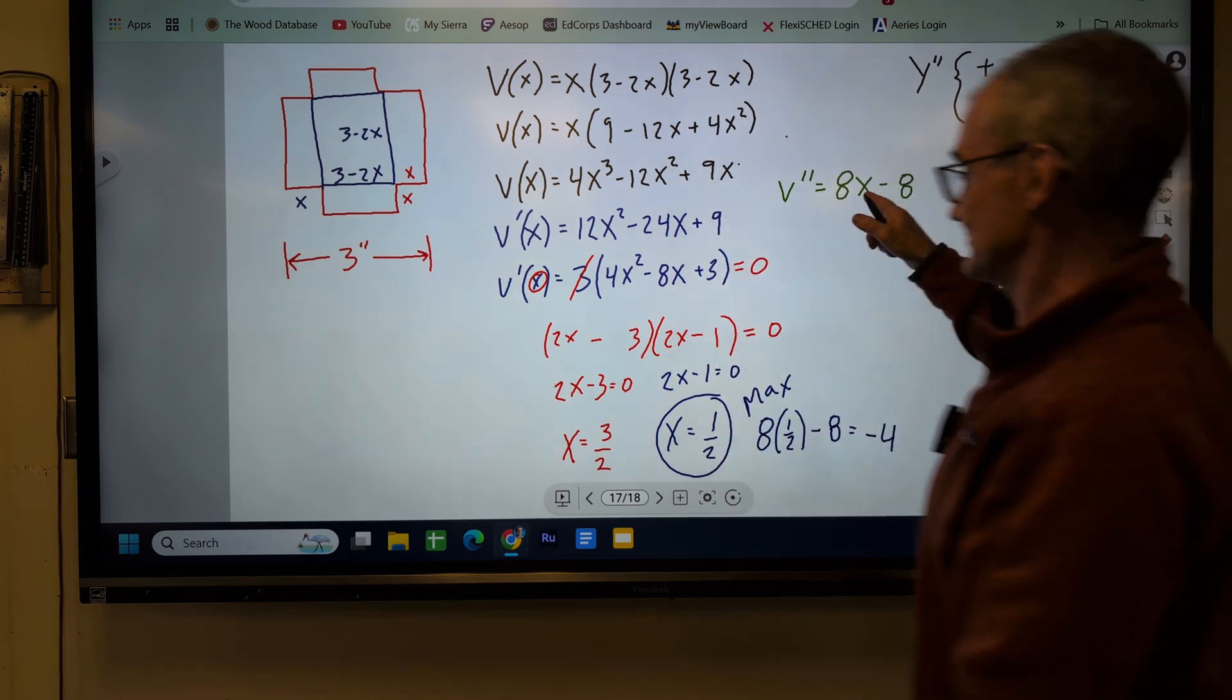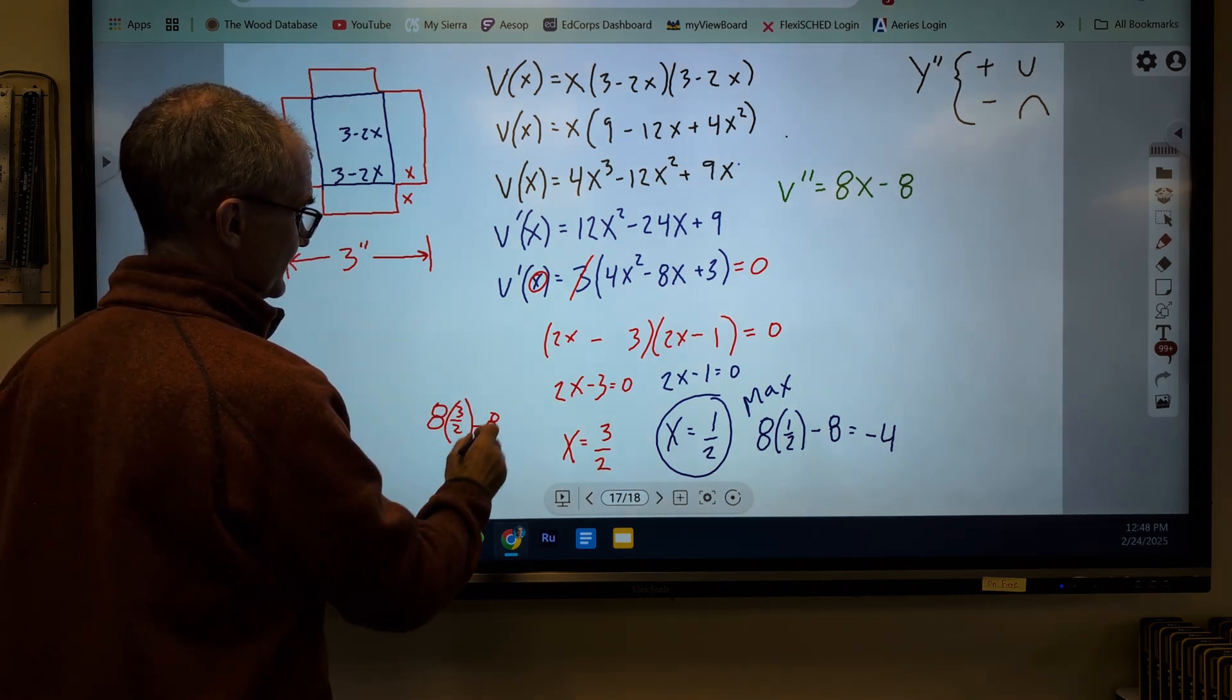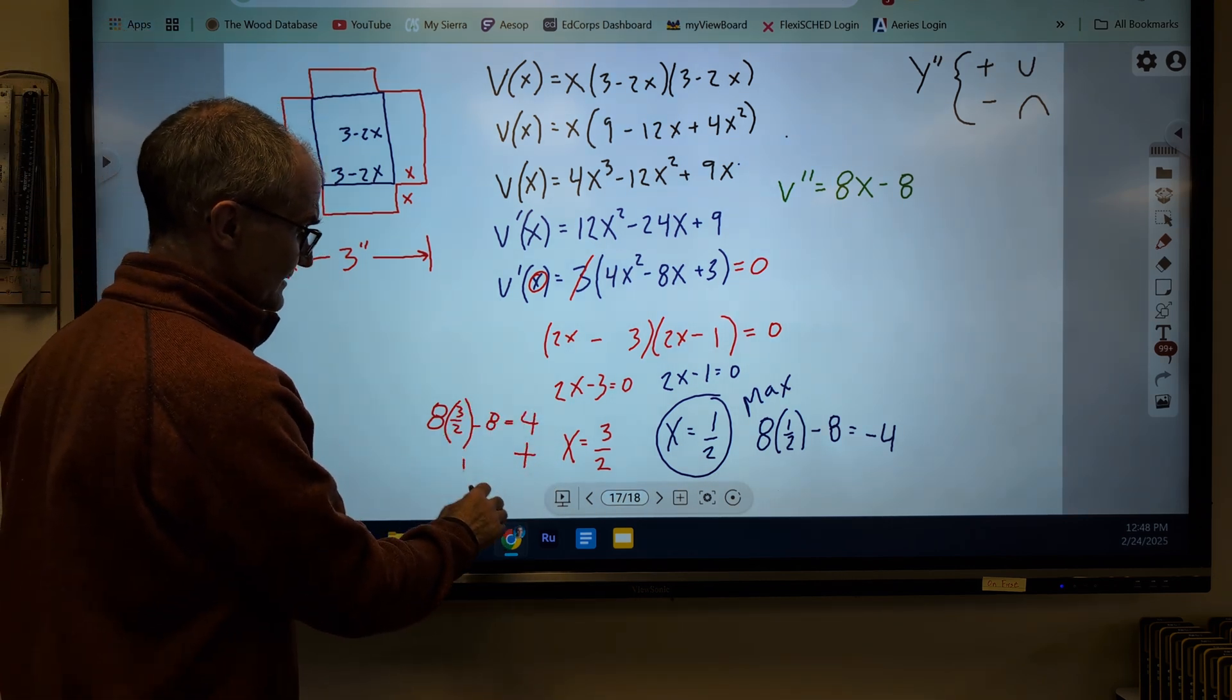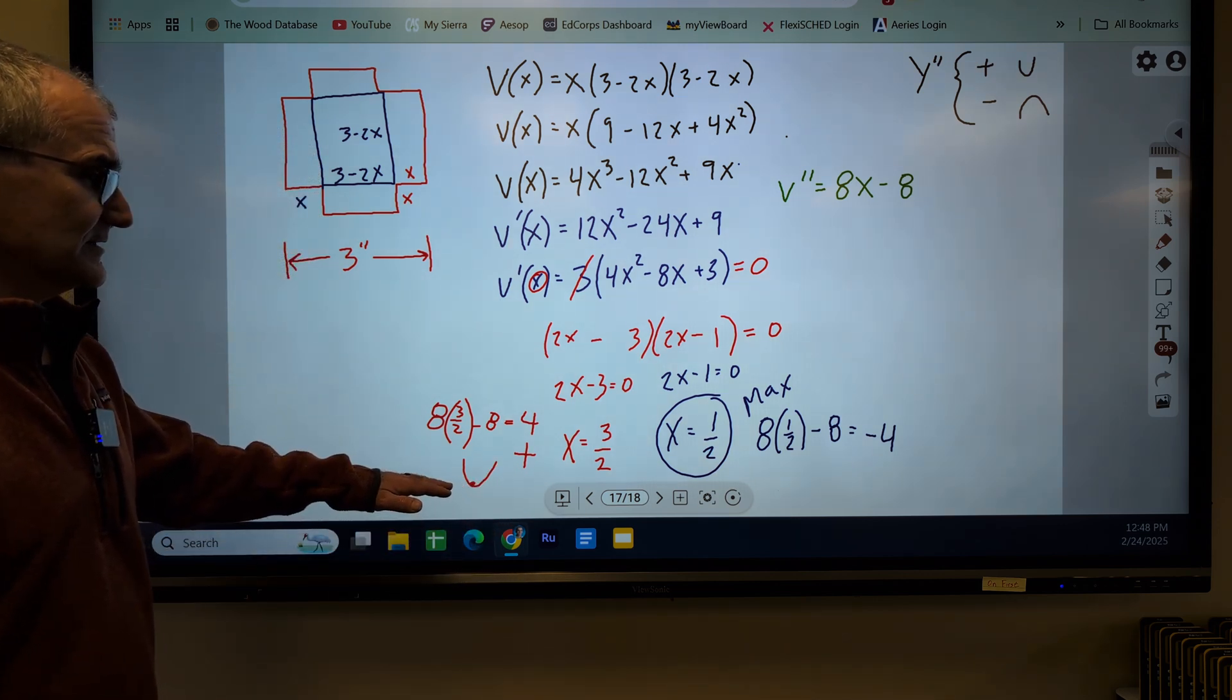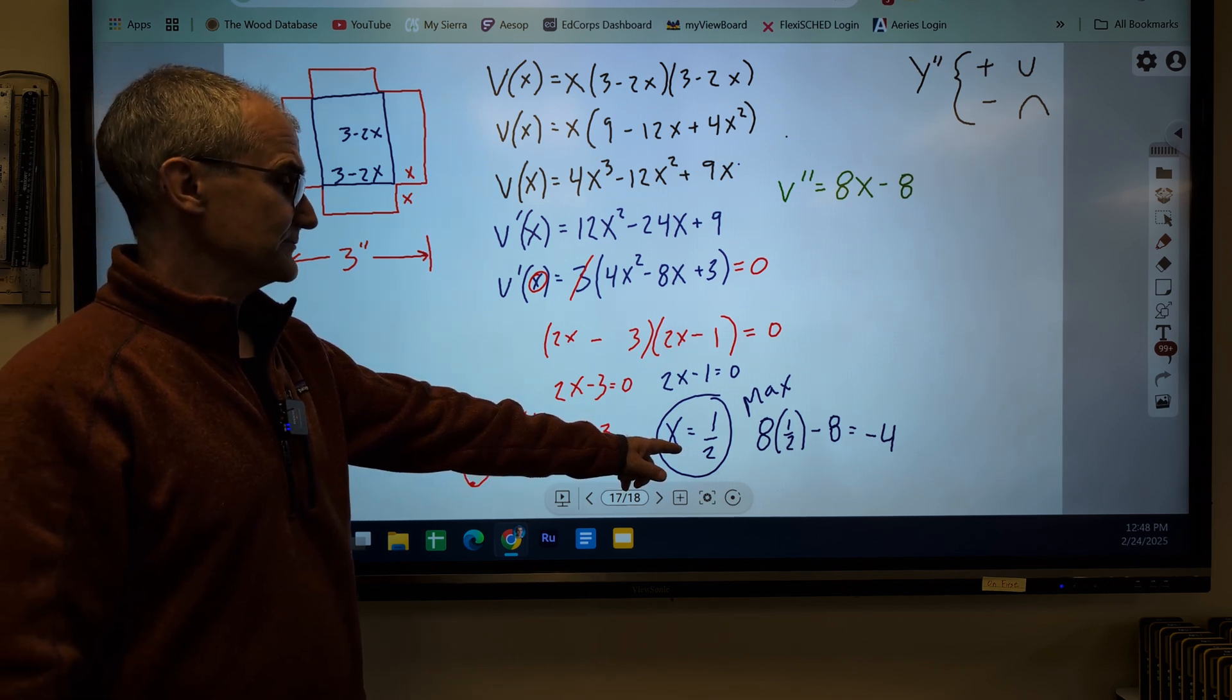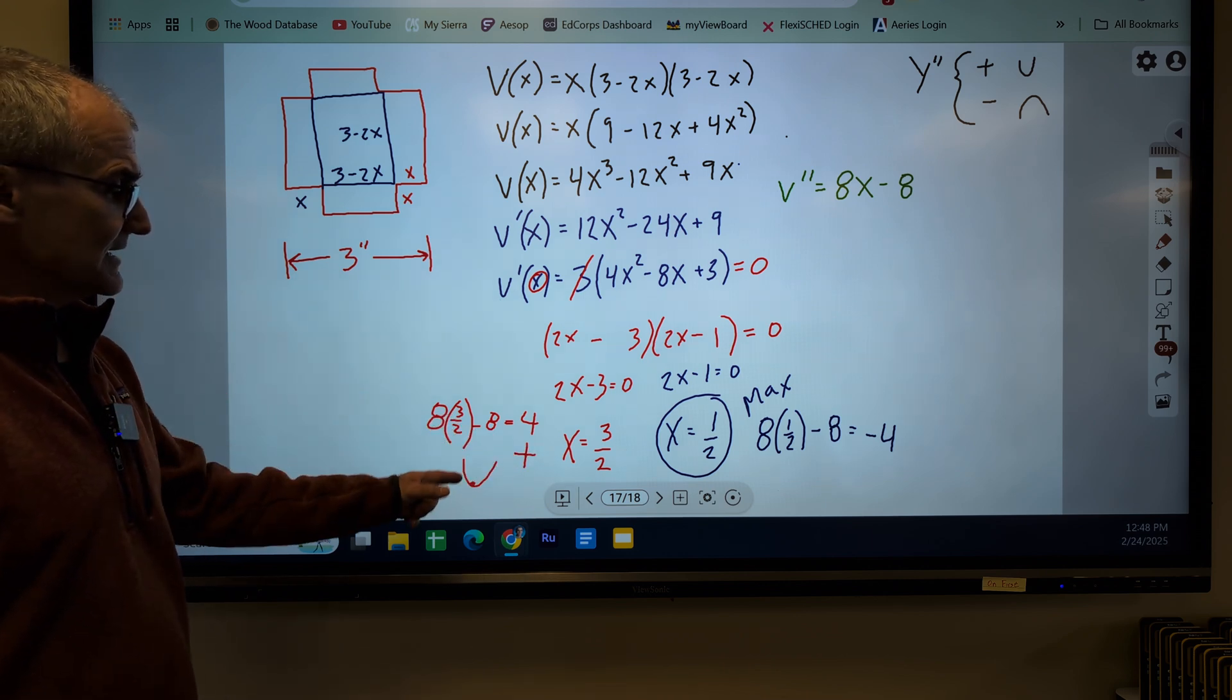My other value, 1 and 1 half, I plug that in there. I have 8 times 3 halves minus 8. So 12 minus 8 is equal to 4. This is positive. It is positive. So this value is a minimum at the bottom of the graph. And I'll show that to you graphically as well. So remember this. X equals 1 half, the second derivative is negative. Therefore, it is a maximum. The output's a maximum. Here, my other value 3 halves, when I plug it into the second derivative, it is a positive. So it's a minimum.